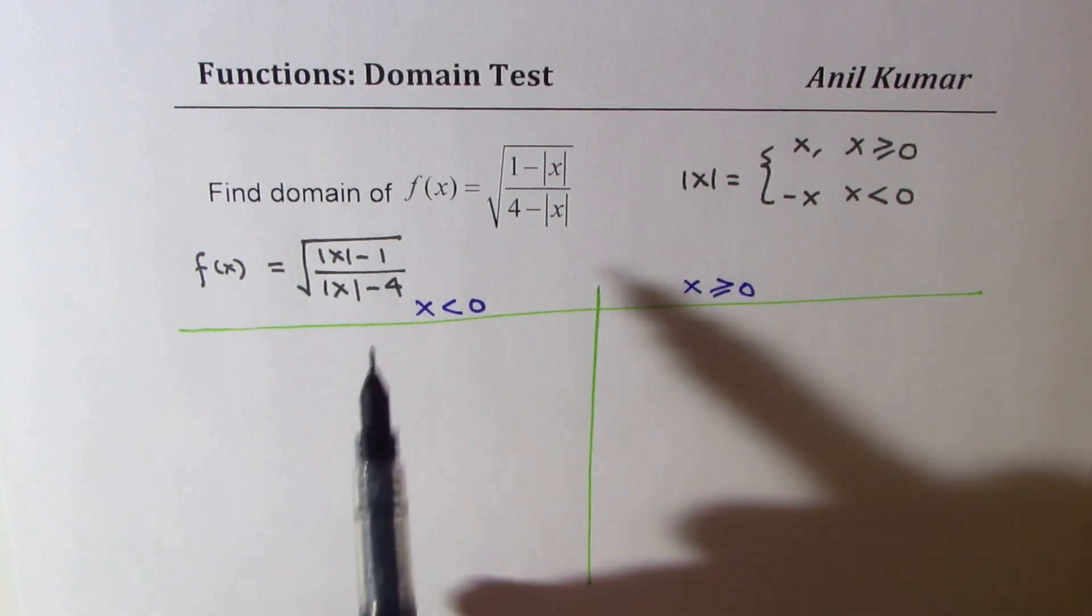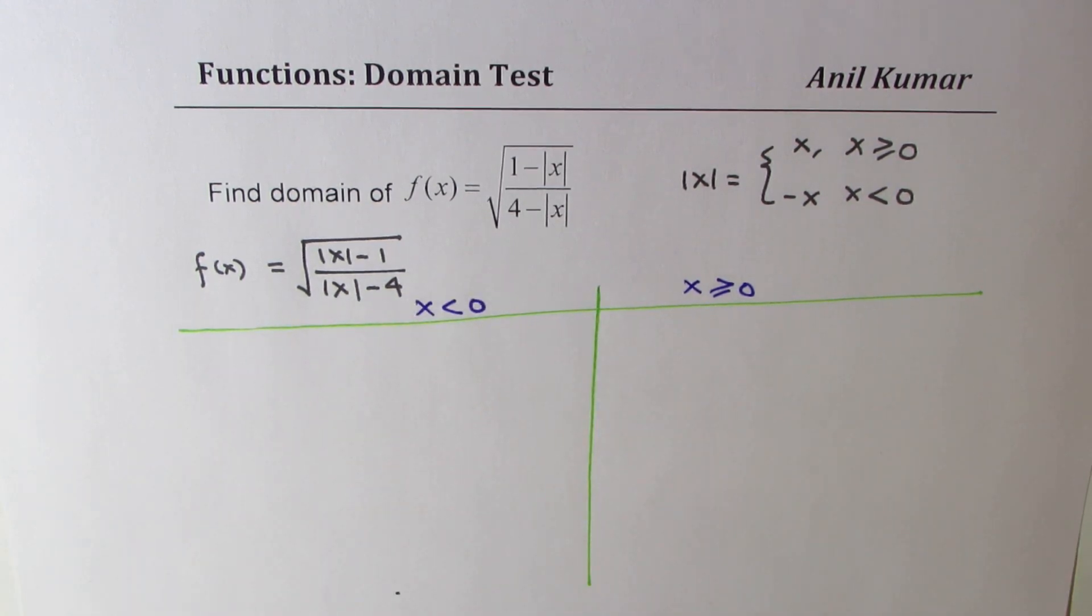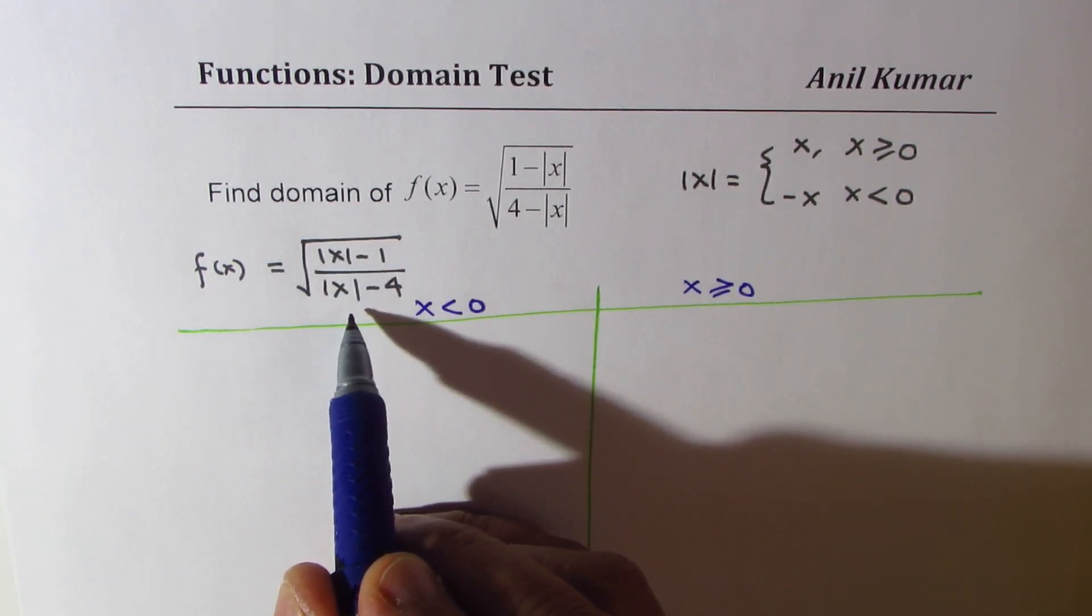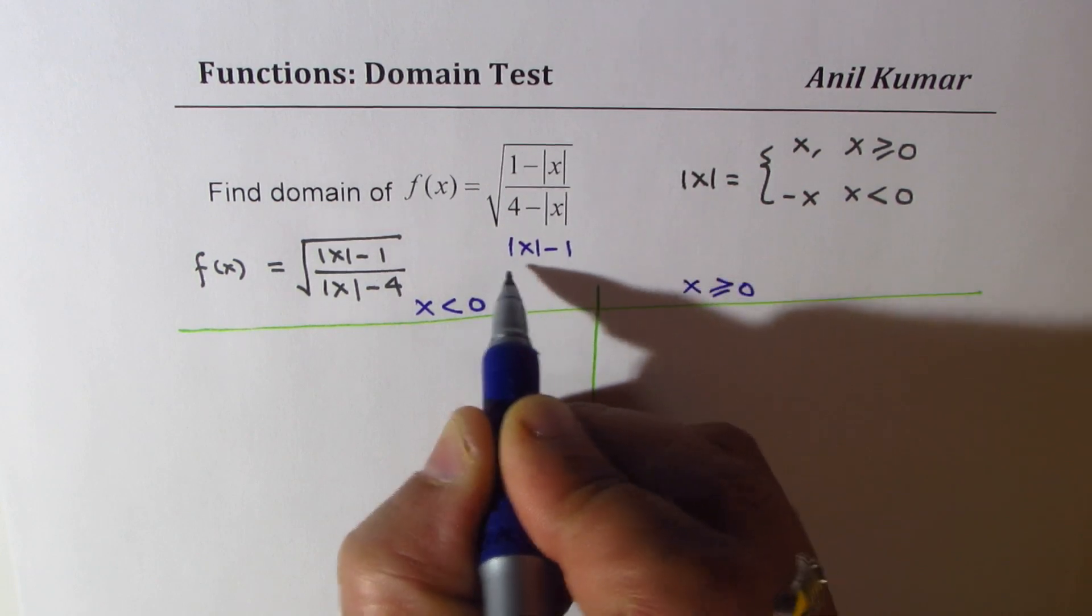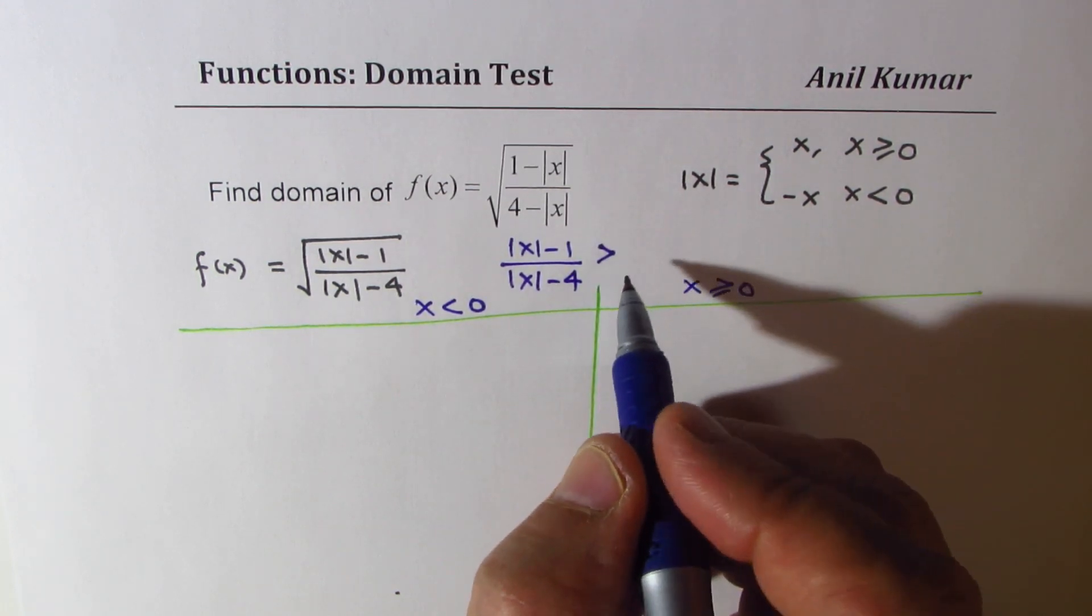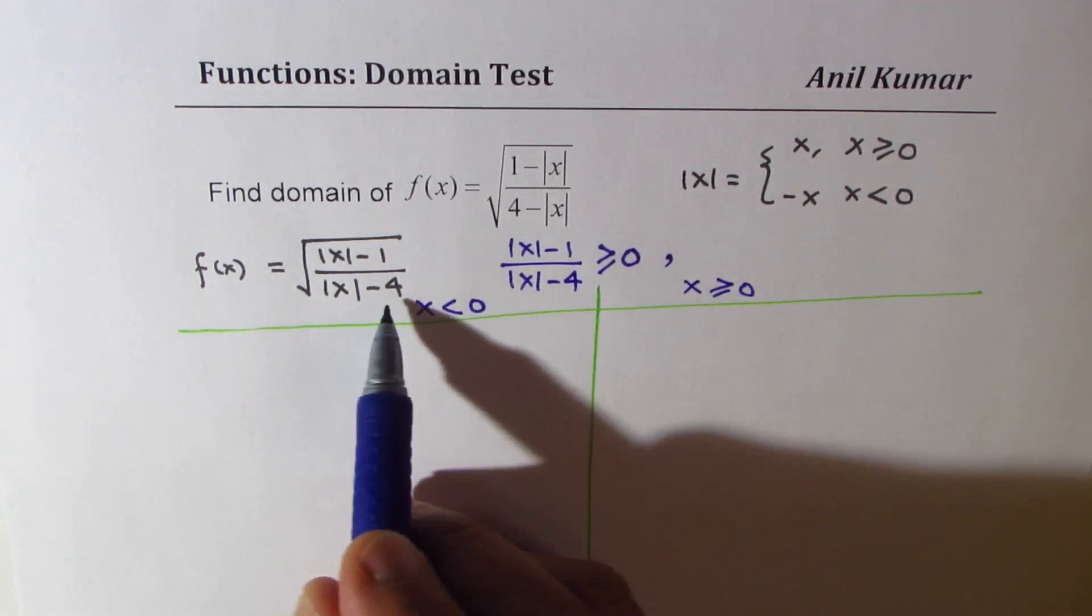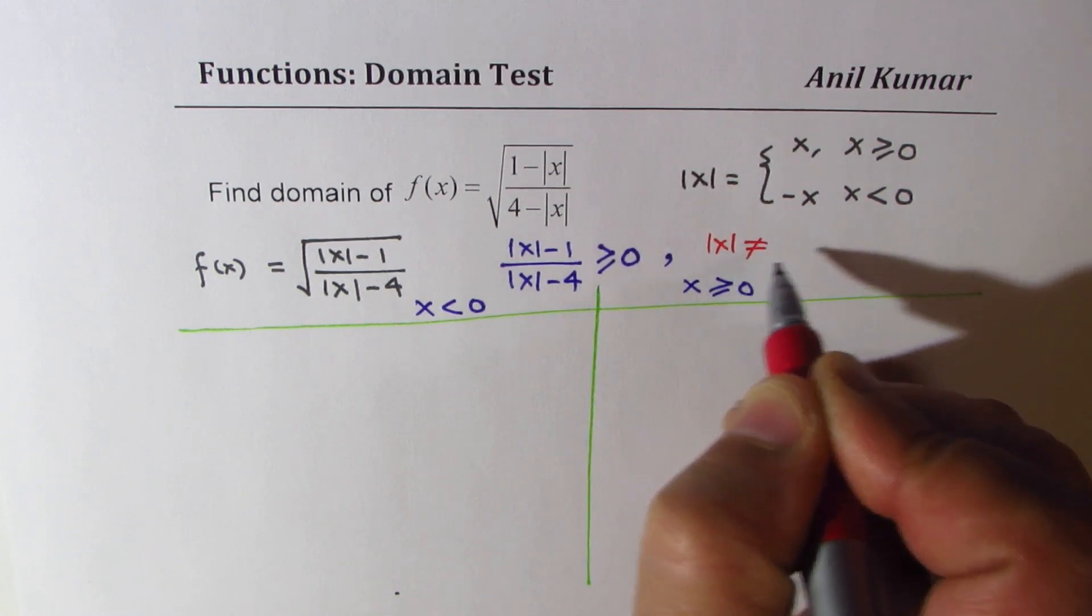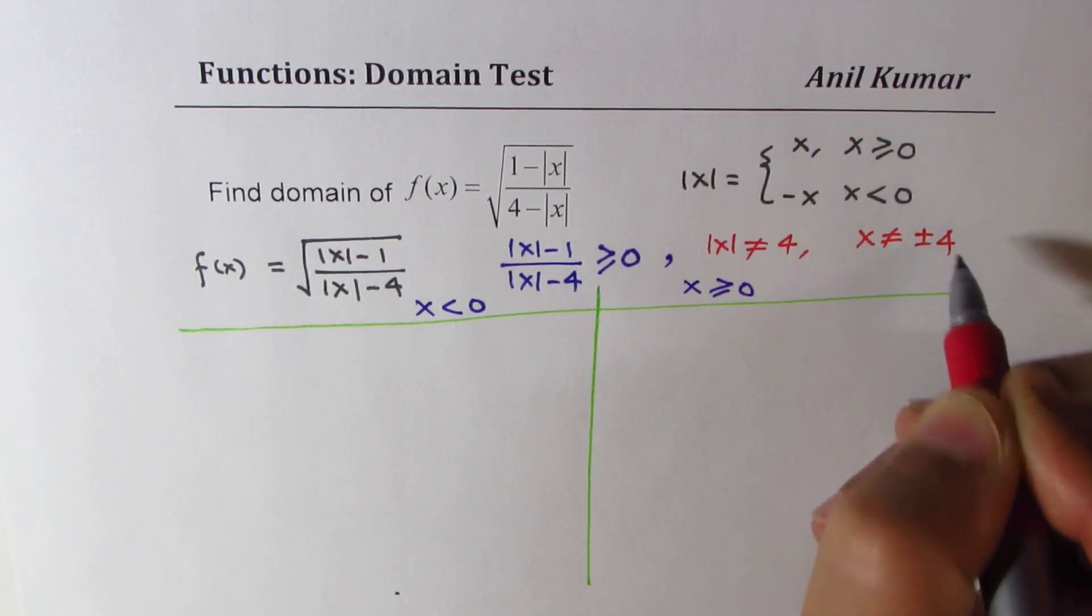When we are talking about domain, we also want that within this square root everything is non-negative. That is to say we want absolute value of x minus 1 over absolute value of x minus 4 should be greater than or even equal to 0. Now denominator cannot be 0. So that gives us one restriction which is absolute x is not equal to 4. So that gives you that x is not equal to plus minus 4. So that is one part of our solution.